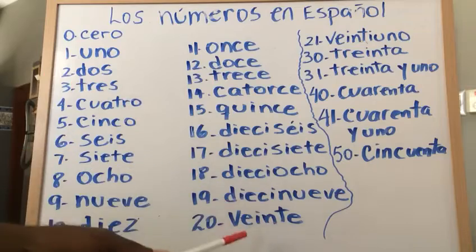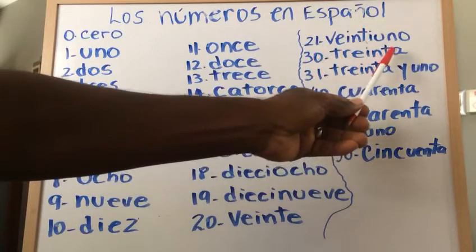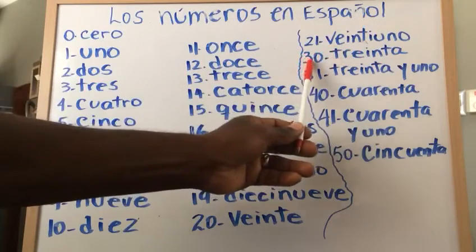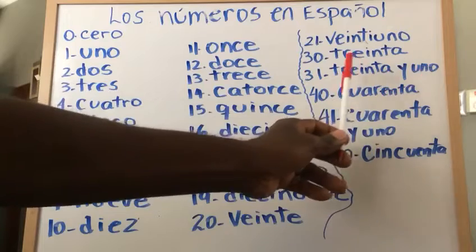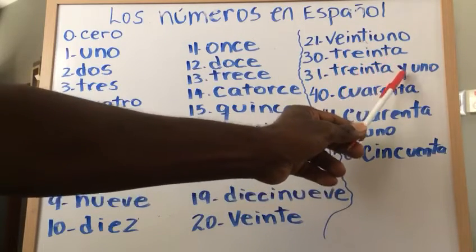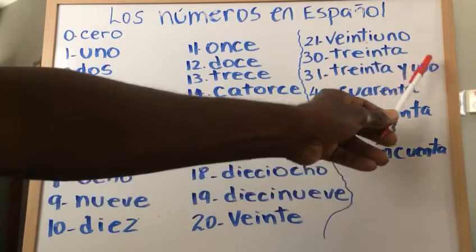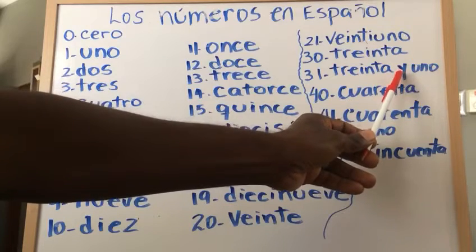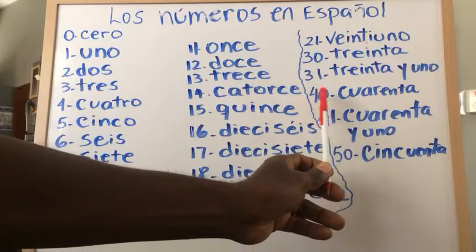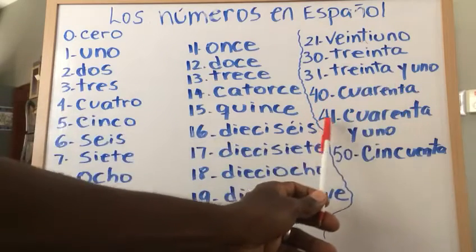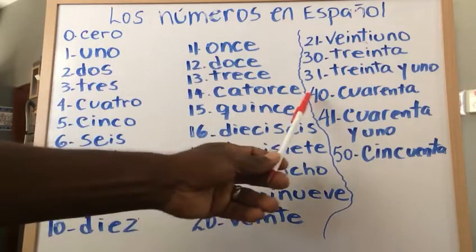You go on to 30 — 'treinta.' To say 31, you do 30 'y' 1, 'treinta y uno.' The letter 'y' in the middle means 'and,' so it's '30 and 1.' Then you have 40 — 'cuarenta' — and you do 'cuarenta y uno,' 'cuarenta y dos,' 'cuarenta y tres,' 'cuarenta y cuatro,' and so on.